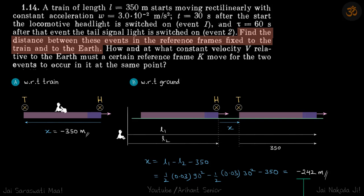If you are sitting on the train, you see the first event happening, say, 300 meters ahead of you, and then the second event happening 50 meters behind you. So taking the final position minus the initial position of both events gives minus 350 meters. This is the displacement of event two minus event one with respect to the train.